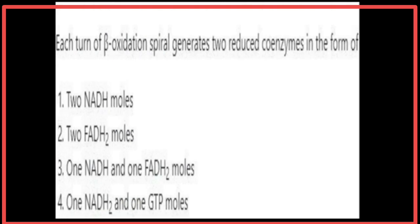Each turn of the beta-oxidation spiral generates two reduced coenzymes in the form of one NADH and one FADH2.